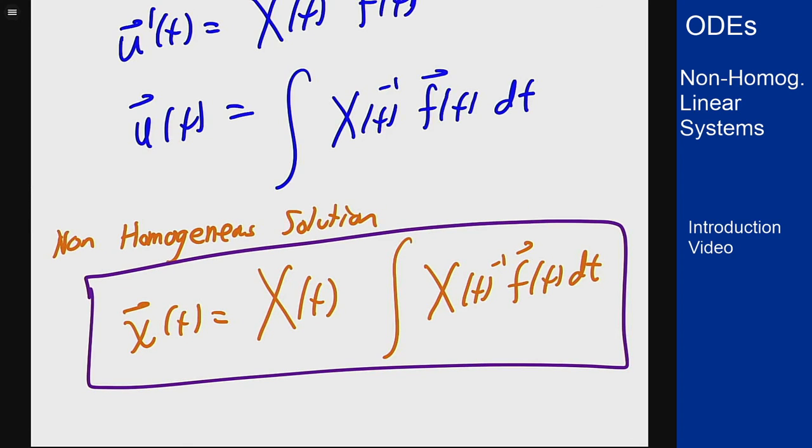So it looks even simpler here, there's no sort of weird condition coming out of it. It gives us a method for working out the solution. Once we have this fundamental matrix we can use variation of parameters to then figure out the solution to these non-homogeneous systems as well.